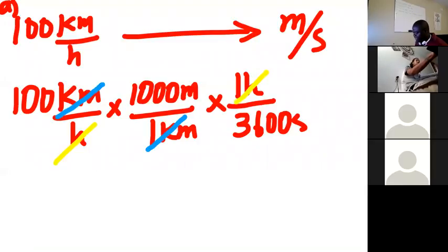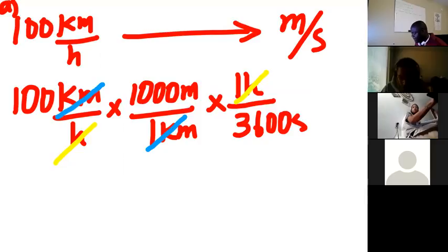That way I'm left with meters over seconds, which is what we wanted. So all we need to do now is multiply the numerator. So 100 times 1,000, that's 100,000. One hour times one kilometer times 3,600 seconds is 3,600. Let's say 1,000 divided by 36, it will cancel the two zeros.